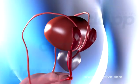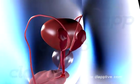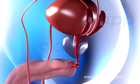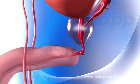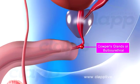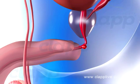Cowper's glands or bulbourethral glands are pea-sized glands lying at the base of the penis and open directly to the urethra. Their alkaline secretion acts as a lubricant for the penis and also neutralizes the acidity of any urine traces left in the urethra. This secretion is produced during sexual excitation.